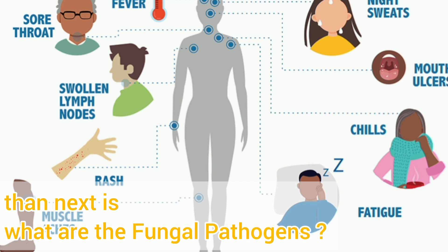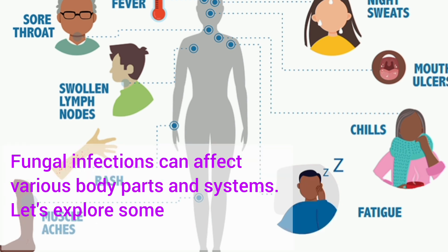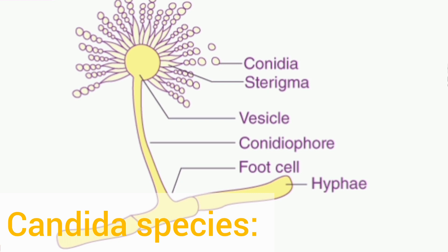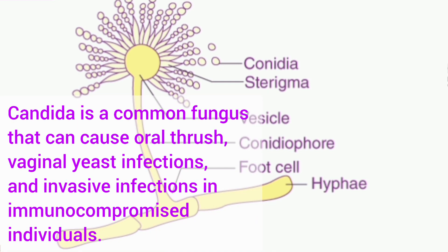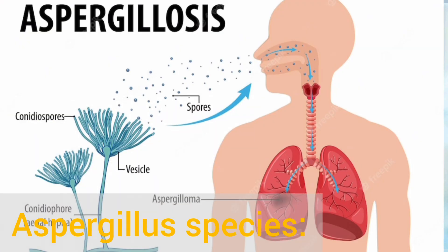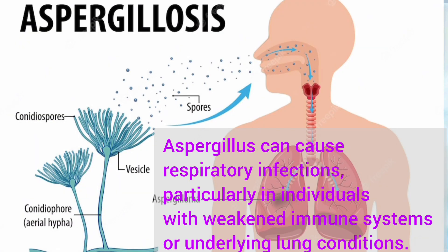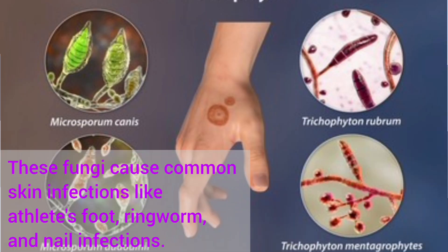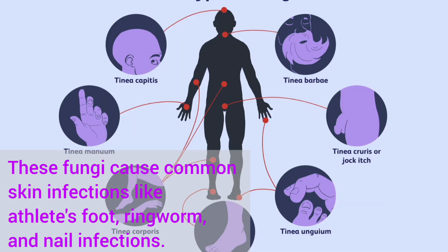Then next, what are the fungal pathogens? Fungal infections can affect various body parts and systems. Candida species — Candida is a common fungus that can cause oral thrush, vaginal yeast infections, and invasive infections in immunocompromised individuals. Aspergillus species — Aspergillus can cause respiratory infections, particularly in individuals with weakened immune systems or underlying lung conditions. Dermatophytes — these fungi cause common skin infections like athlete's foot, ringworm, and nail infections.